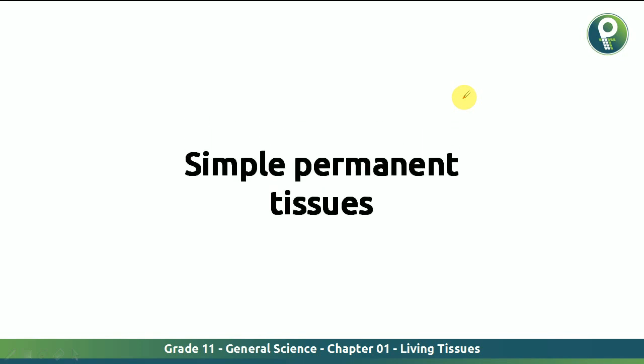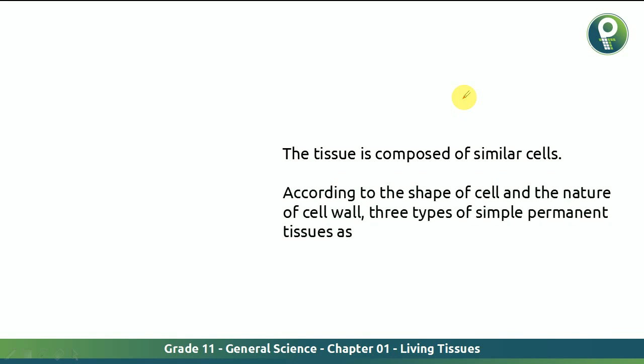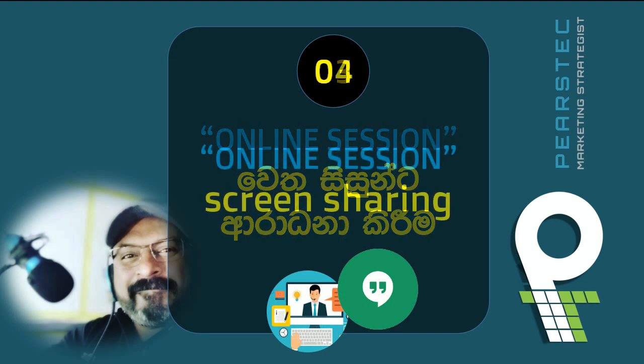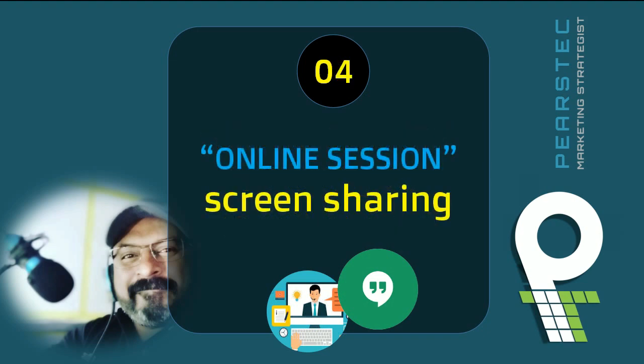Let's understand the simple permanent tissue. The tissue is composed of similar cells. According to the shape of the cells, an explanation can be given. So in an online session, screen sharing is wonderful — isn't it interesting? Screen sharing is great. And next, let's look at what can be done in Google Classroom.